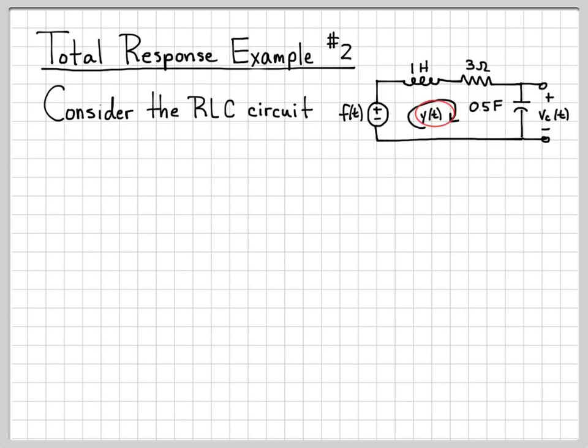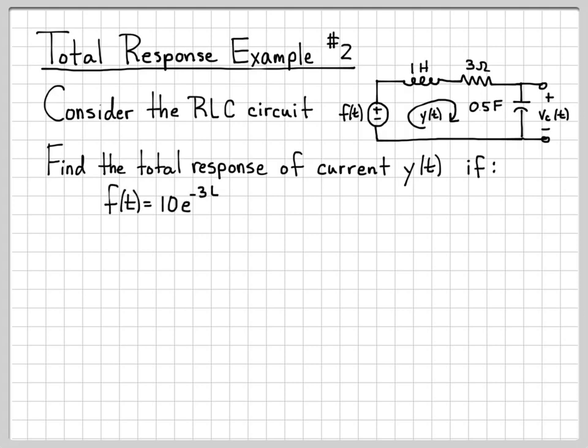This is the equation or the quantity y(t) that we would like to relate to F(t) and then analyze the system accordingly. So for the problem, we're going to find the total response of the current y(t), and we're going to find it under the following assumptions and conditions. First, we're going to assume that we have an input F(t) that is equal to 10e^-t u(t). And our initial conditions are y(0^-) = 0 for the current, and the voltage across the capacitor at time 0^- has a value of 5.